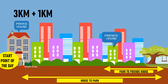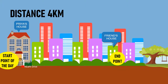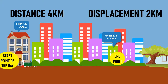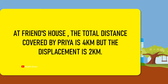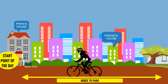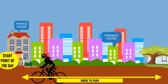From the park, Priya moves to her friend's house. The distance covered by Priya is three kilometers plus one kilometer, which equals four kilometers. The path length between Priya's house and her friend's house is two kilometers, so the displacement is two kilometers. See here — the distance and displacement values are different.